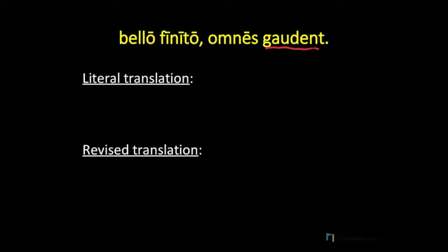On to the examples. 'Bello finito. Omnes gaudent.' The main verb is 'gaudent,' and 'omnes' is our nominative plural subject. 'Bello finito' is our ablative absolute. You can recognize it because it has two words in the ablative case, and one of those words is a participle — 'finito.'